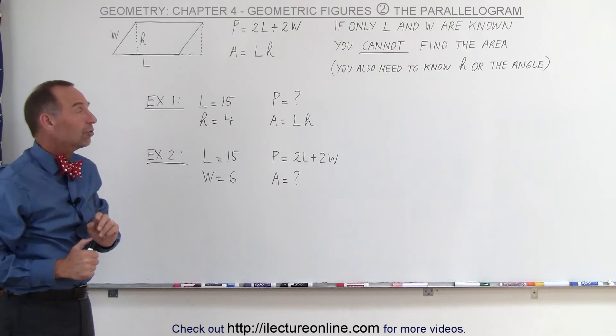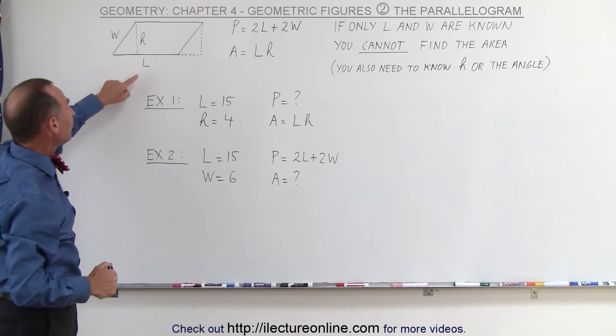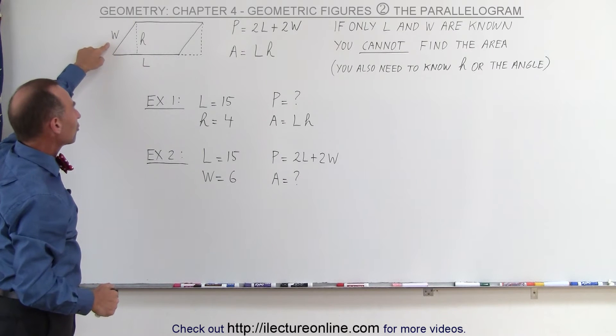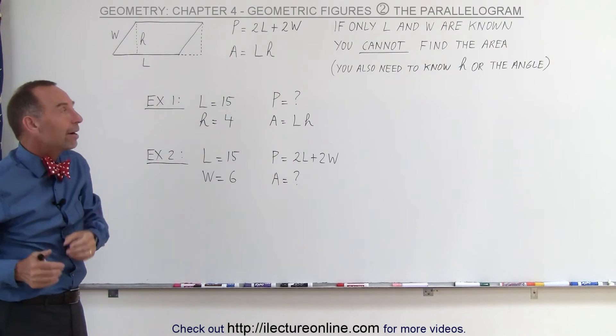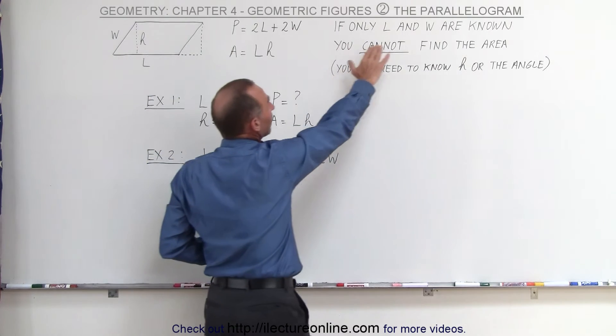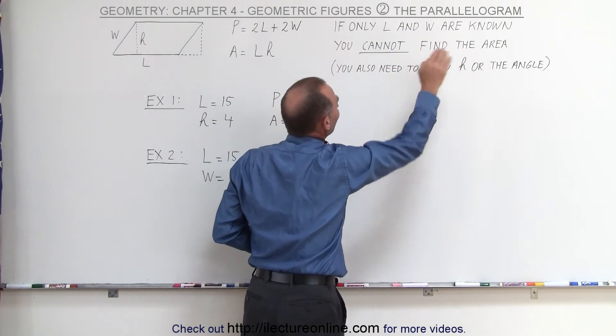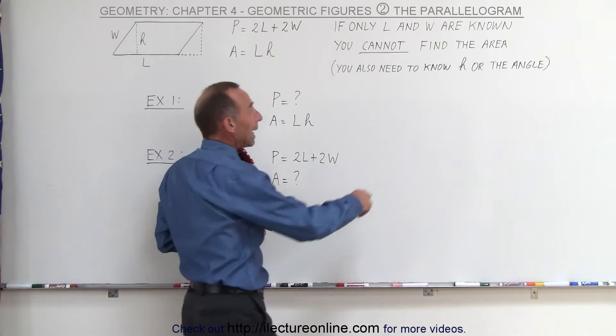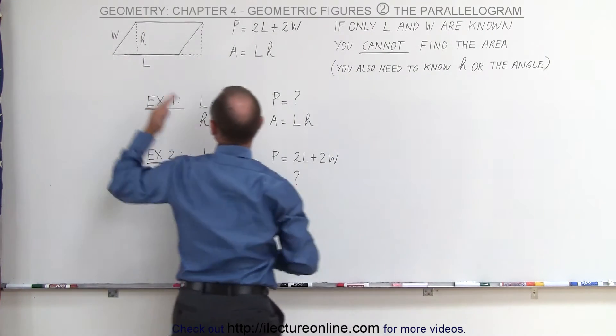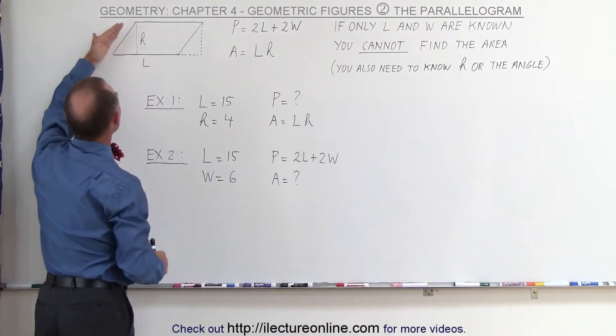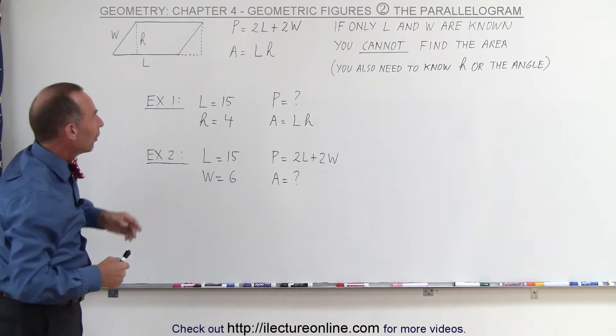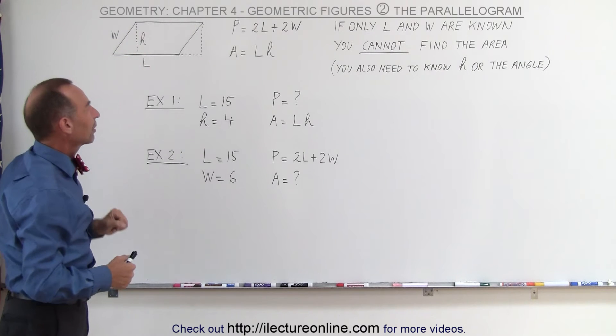Now, you have to be cautious here, because if they only give you the length of the long side and the length of the short side, you cannot find the area. If only L and W are known, you cannot find the area. You must also know H or the angle between W and L. If you know the angle or the height, you can figure it out.